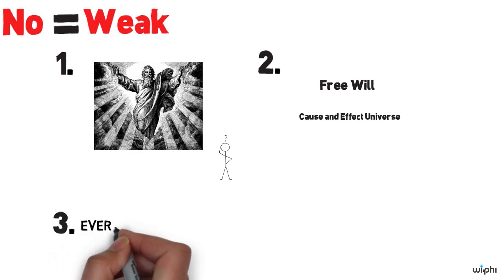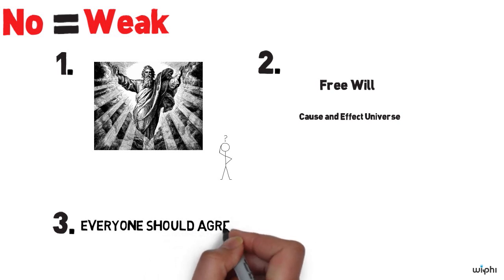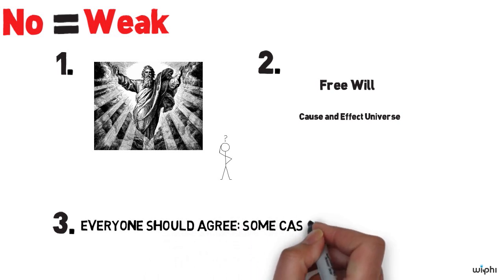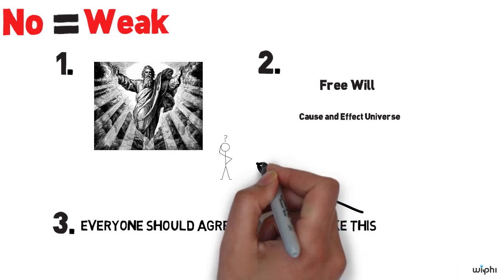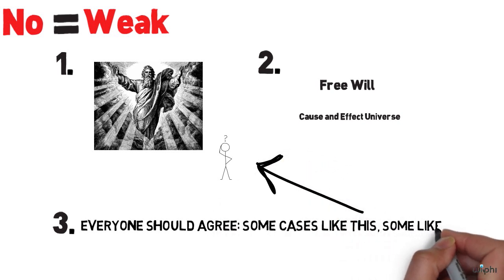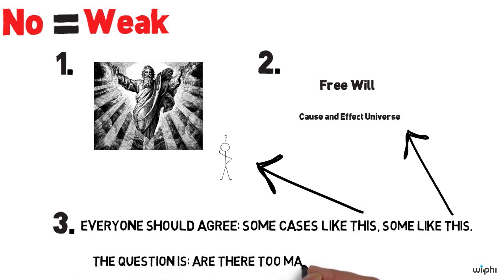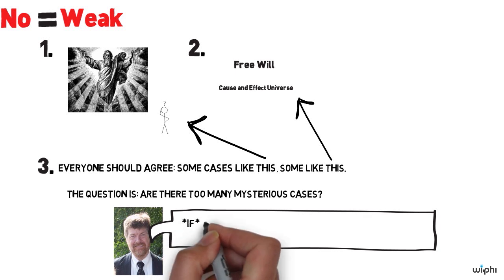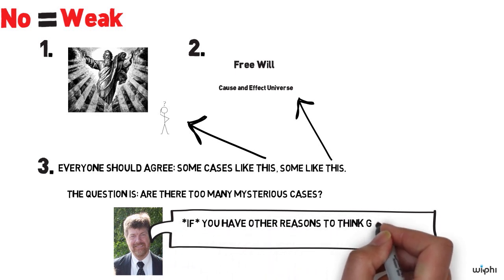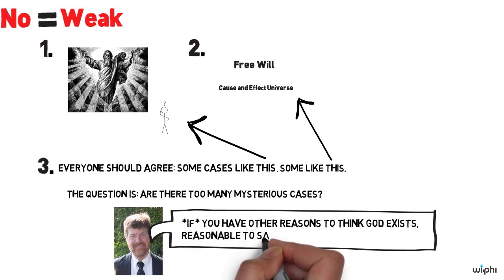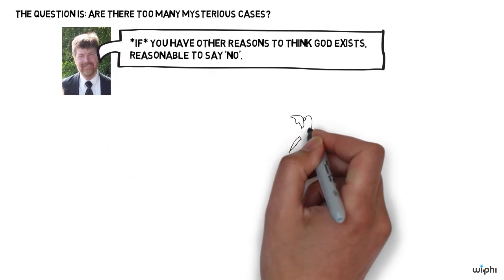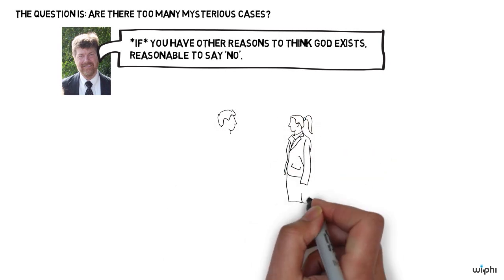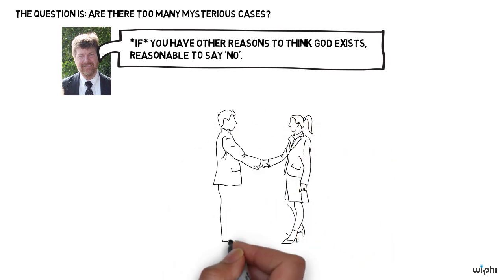Third thing, every philosopher recognizes that we're not going to be able to figure out God's reasons in every case. So we all accept the idea that there are many cases we can figure out and there are many cases we shouldn't be able to figure out. The question is, are there too many cases of that kind? And this is where the disagreement is. I think if you have other reasons to think God exists, then you're in good grounds for saying that this argument is not strong because the number of cases we cannot figure out is not necessarily so great to render existence of God unlikely.